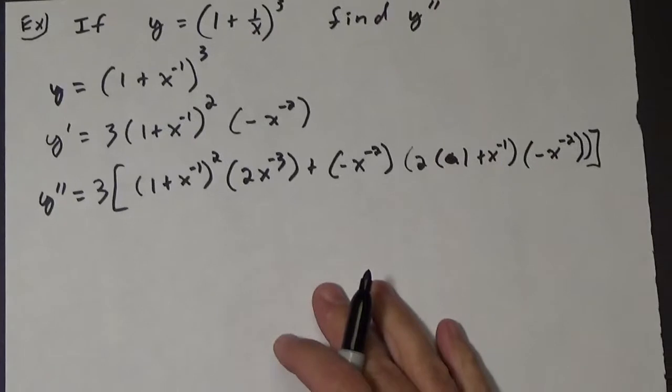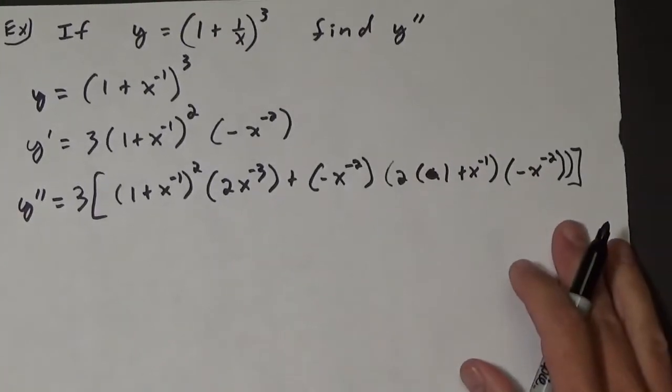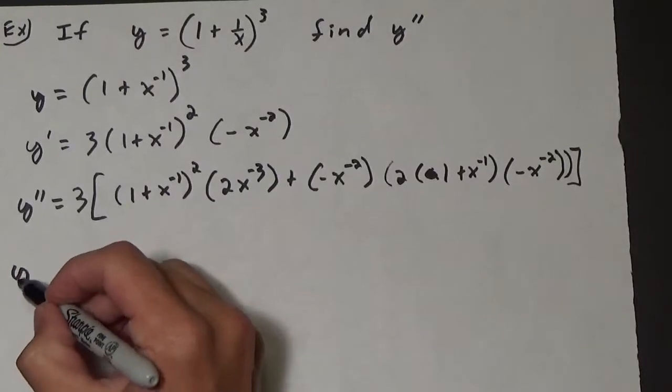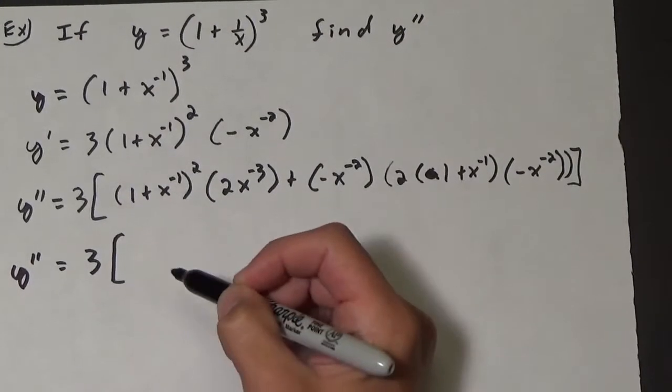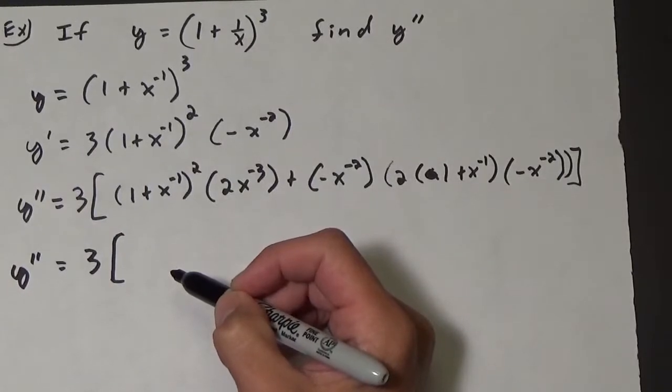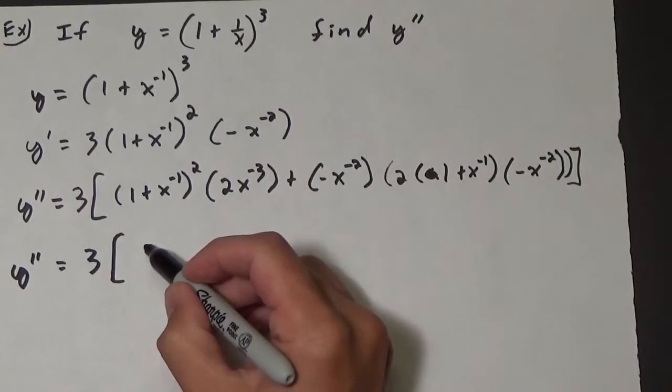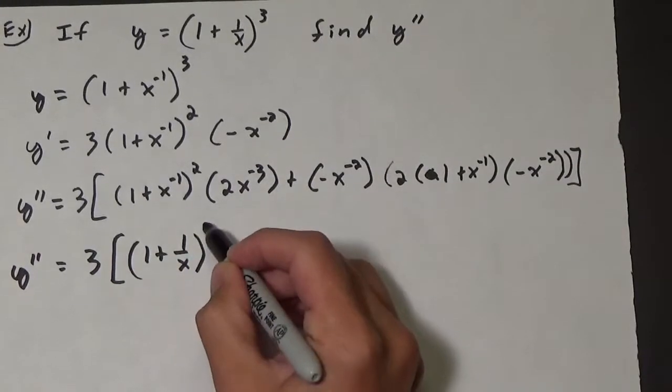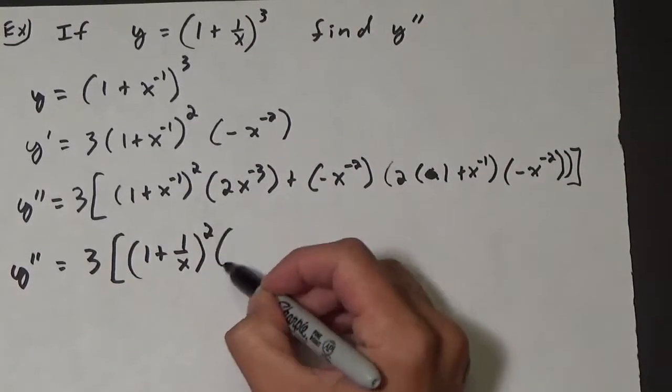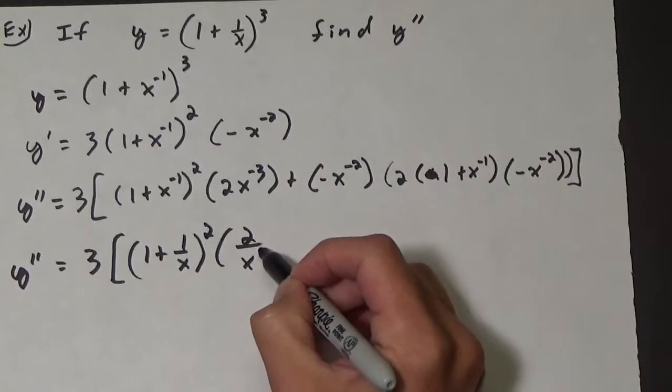Alright, so here's our second derivative, and now all we need to do is just rewrite this. We get y double prime equals 3 times, let's see what we have in here.